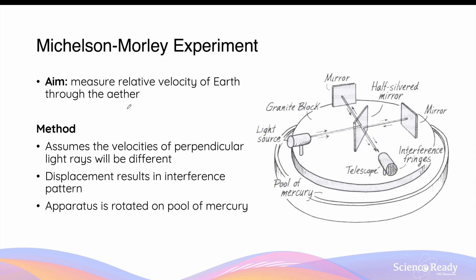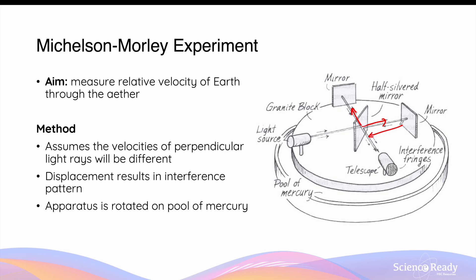In the late 19th century, Michelson and Morley conducted an experiment to measure the relative velocity of Earth through the ether. The experimental apparatus involved firing a beam of light at a half-silvered mirror, which is a special type of mirror that can split the light ray into two perpendicular light rays as shown. These two perpendicular light rays then travel to two separate mirrors that are equal distance from the middle half-silvered mirror, are then reflected, and returned to the half-silvered mirror. When they meet in the middle, they will undergo interference.